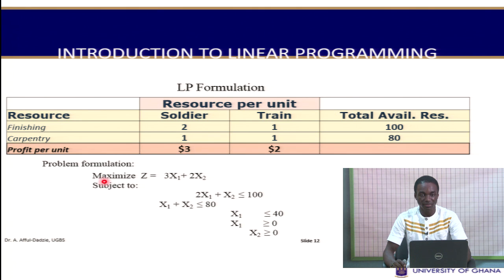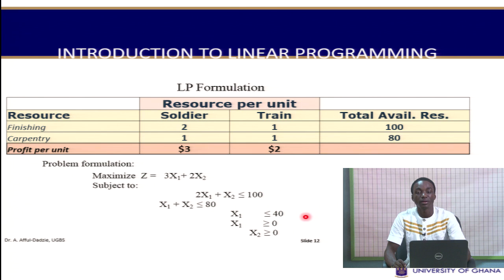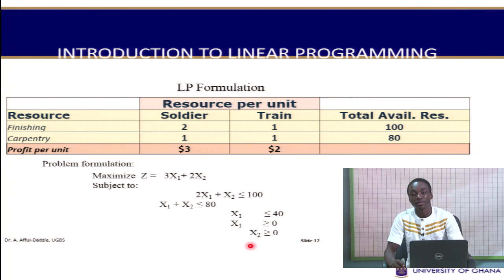Here is a summary of our problem formulation. The objective function is: maximize Z equals 3X1 plus 2X2, subject to: 2X1 plus X2 less than or equal to 100 for finishing hours; X1 plus X2 less than or equal to 80 for carpentry time; X1 less than or equal to 40 for the soldier restriction; and X1 greater than or equal to 0 and X2 greater than or equal to 0 as non-negativity constraints.